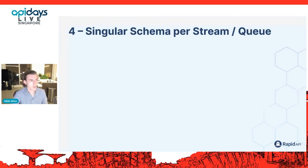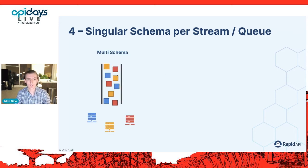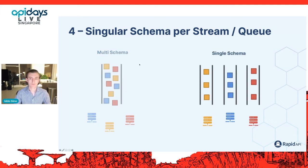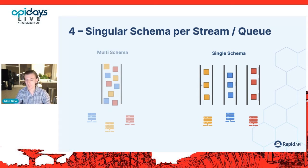Best practice four — use singular schemas for every stream or queue. We've seen that mixing different types of messages or events within one API doesn't yield good results from a performance and scalability perspective. Instead of pulling all different task types into one big queue with consumers filtering them out, it's generally better to have a single schema or workload type per API and have multiple APIs. This produces more clarity for developers, easier documentation, and makes the system itself more efficient.